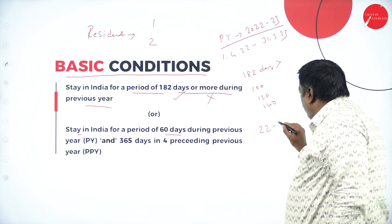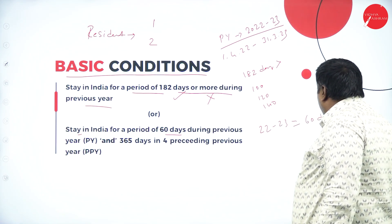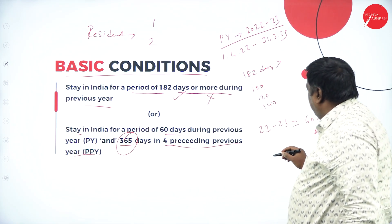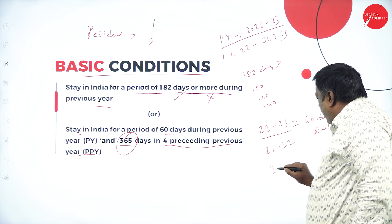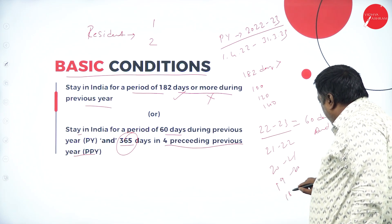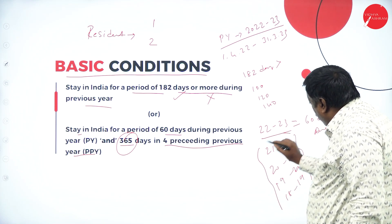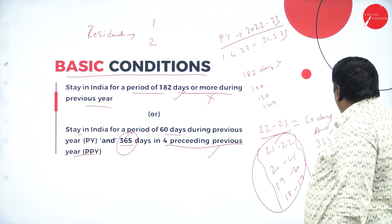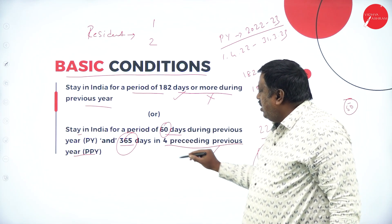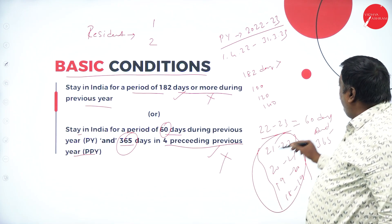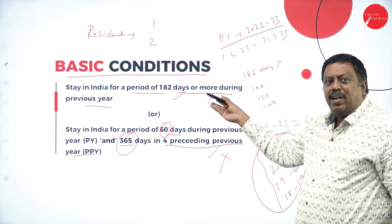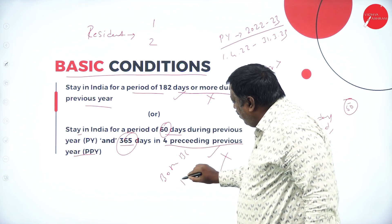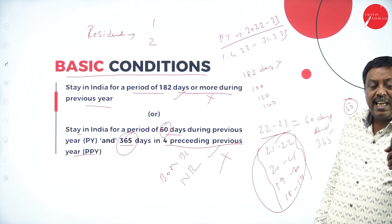The second basic condition is: he or she should have stayed in India for a period of 60 days during the previous year 2022-23, and 365 days during the four preceding previous years — that is 2021-22, 2020-21, 2019-20, and 2018-19. If the total stay across those four years is 365 days, the condition is satisfied. If my stay during the previous year is only 50 days, I have not satisfied this condition, and if neither basic condition is met, I will be called a non-resident.